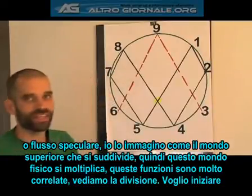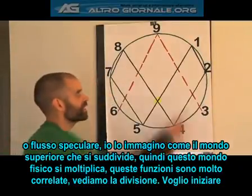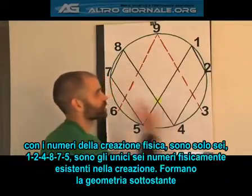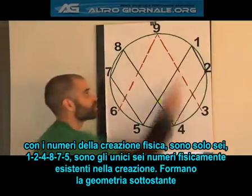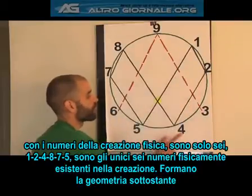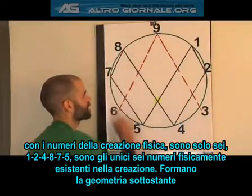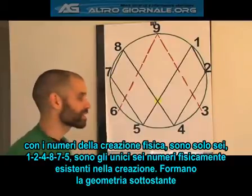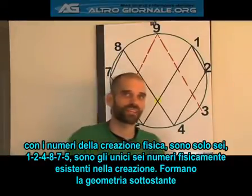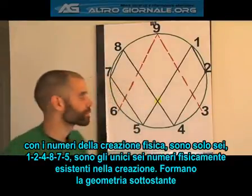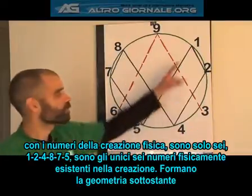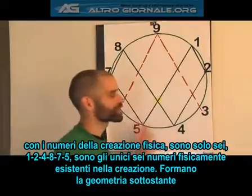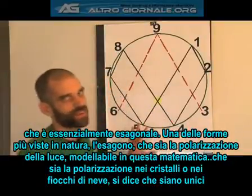So let's look at division. First I want to start with the numbers we have in the physical world of creation, which are only six numbers: 1, 2, 4, 8, 7, and 5. Those are the only six numbers which physically exist in the world of creation.